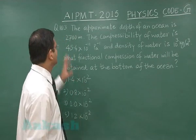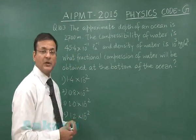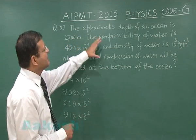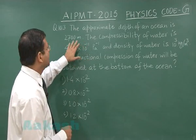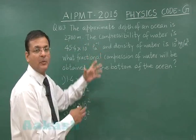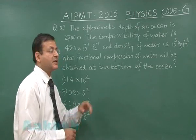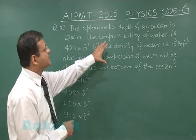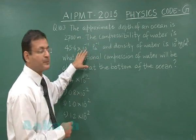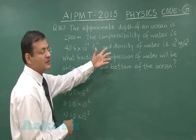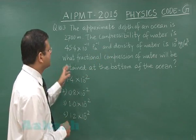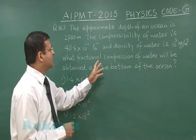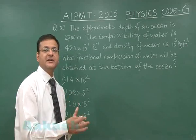Question 103 uses the property of bulk modulus of elasticity. The approximate depth of an ocean is 2700 meters. Compressibility is simply the inverse of bulk modulus of elasticity. The compressibility of water and density of water (10³ kg/m³) are given. The question asks what fraction of compression of water will be obtained at the bottom — that is, the fractional change in volume ΔV/V.